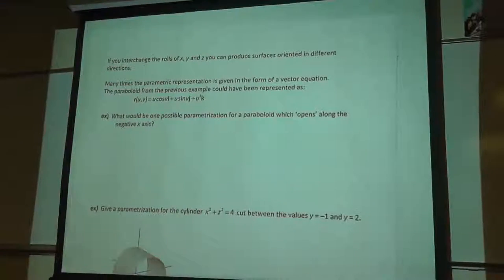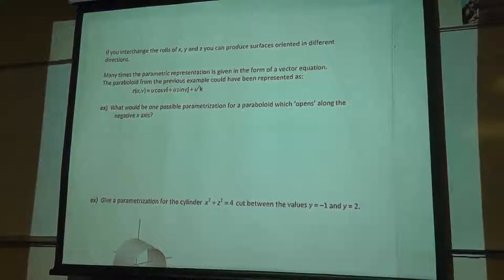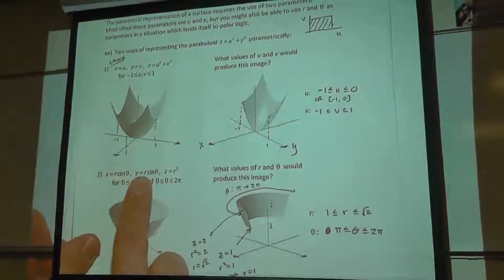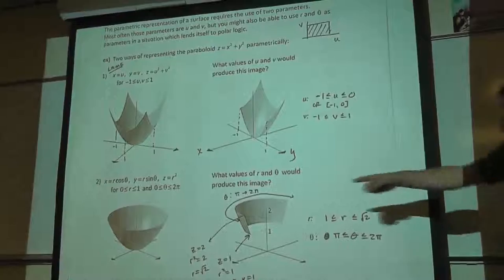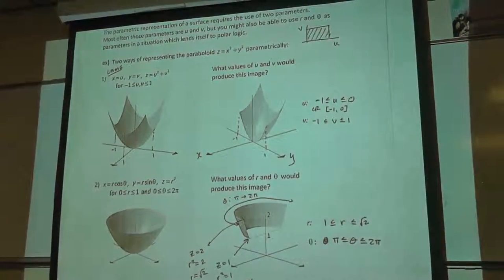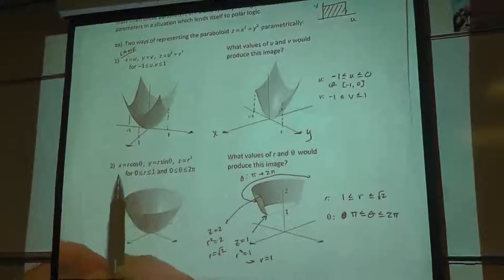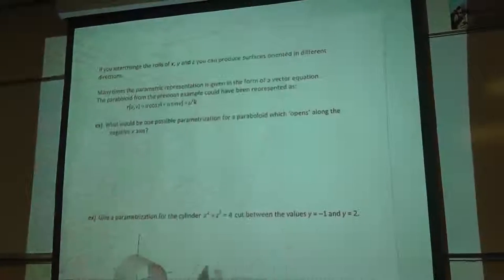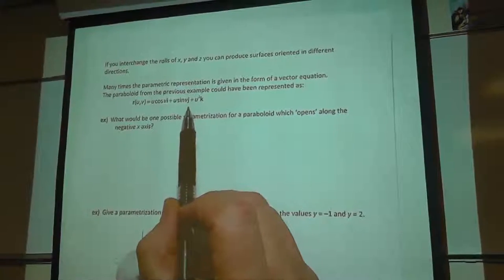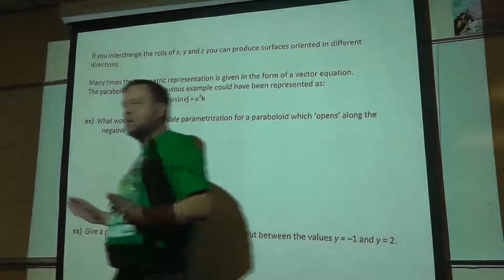If you interchange the roles of x and y, you can orient the surface in different directions. For example, x equals r cosine theta, y equals r sine theta, z equals r squared gives me this specific paraboloid opening upward from the origin in the positive z-axis direction. In most textbooks, instead of getting the parametric equations in x, y, z equals form, sometimes you see the parametric surface represented as a vector equation, which sounds kind of weird because you're used to vector equations being only depending on t.